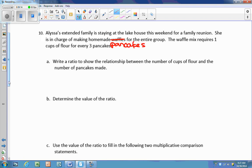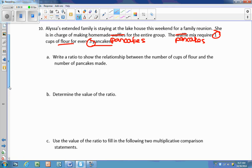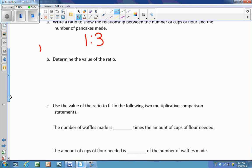For the entire group, the pancakes mix requires one cup of flour for every three pancakes. Write a ratio to show the relationship between the number of cups of flour and the number of pancakes made. One cup of flour, three pancakes. Determine the value of the ratio.